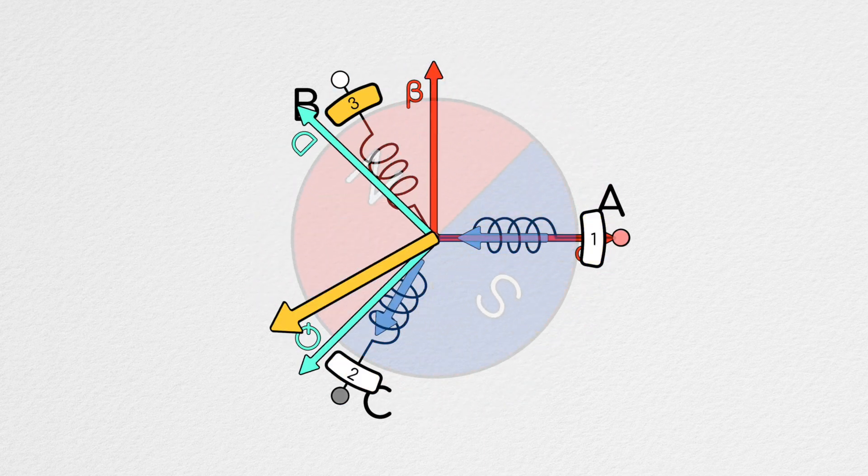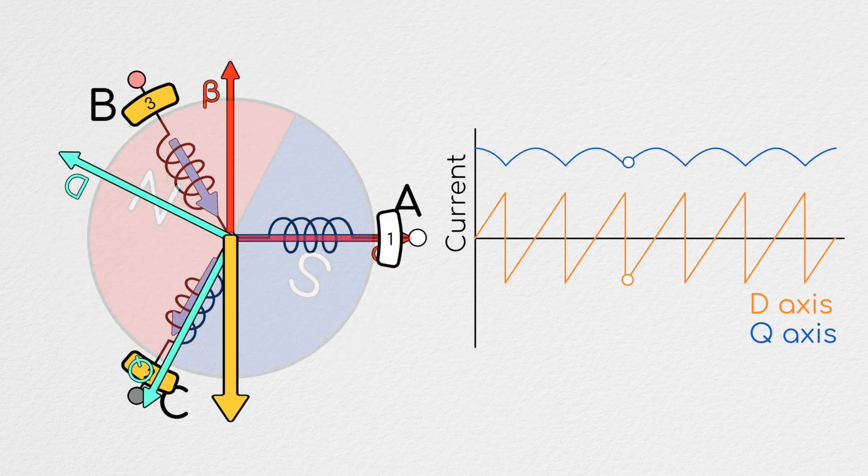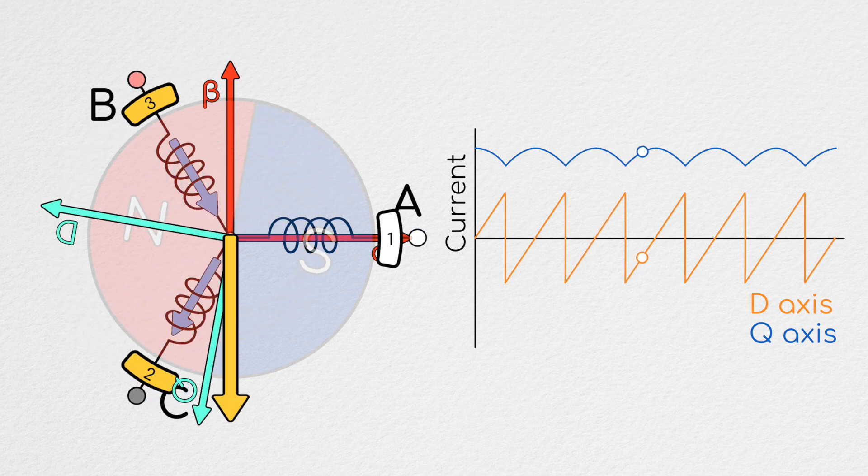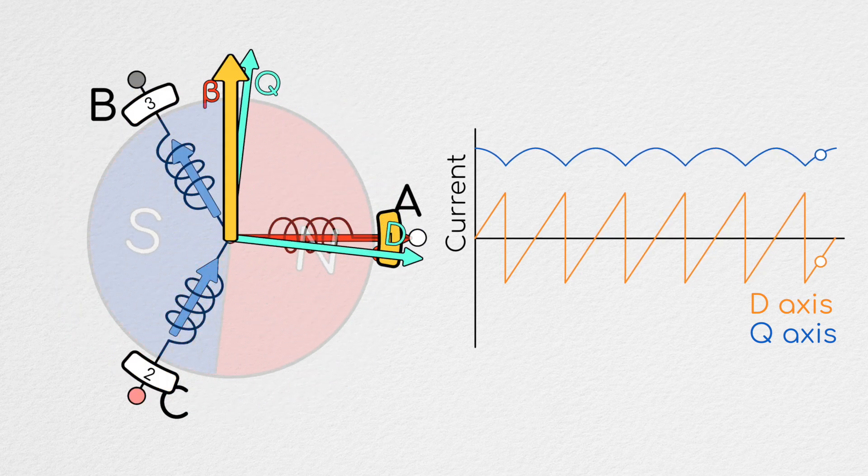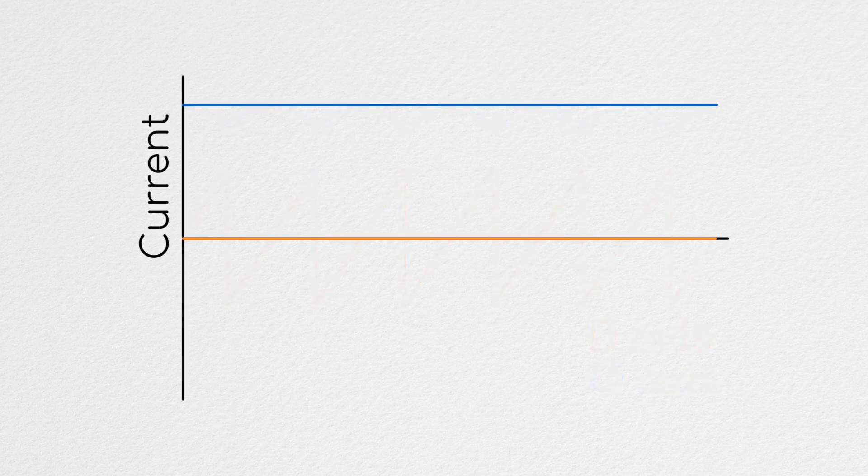As we showed last time, when performing six-block commutation, the currents along the Q and D axis vary as the rotor turns, with the torque being minimized at the transition point between hall sectors. This episode, we're going to start working towards a commutation method which eliminates these variations. So, let's get into it.